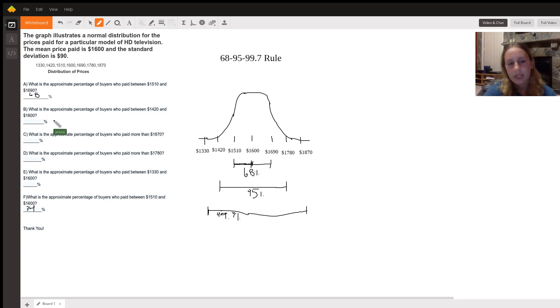And then finally, we're going to solve B: what is the approximate percentage of buyers who pay between $1,420 and $1,600? So if 95% of the values is between $1,420 and $1,780, half of that would just be 47.5. So between $1,420 and $1,600, right here, is 47.5% of the values. The answer to B is 47.5%.